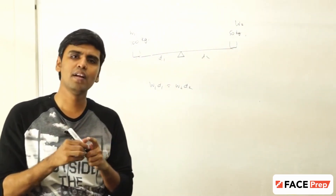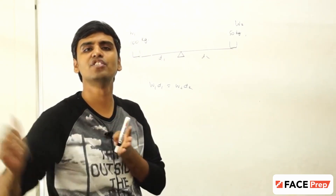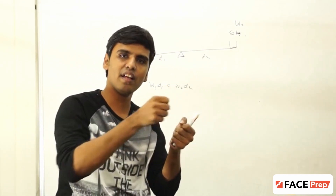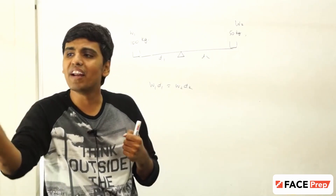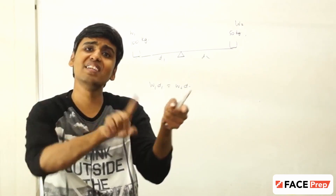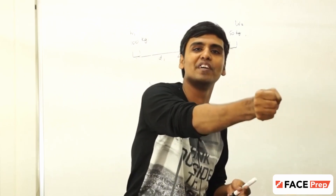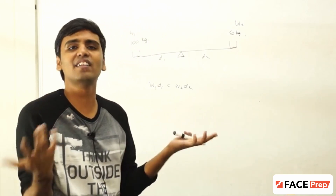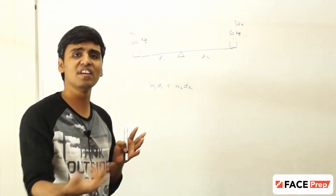For the seesaw to be in balance, w1 × d1 should equal w2 × d2. A real-world example: why is a door handle always towards the edge of the door, farthest from the pivot? Because when I apply even the least effort, the large distance multiplies that effort. If you placed the handle closer to the pivot, you would need to put in much more effort to pull it. So maths and physics are connected.